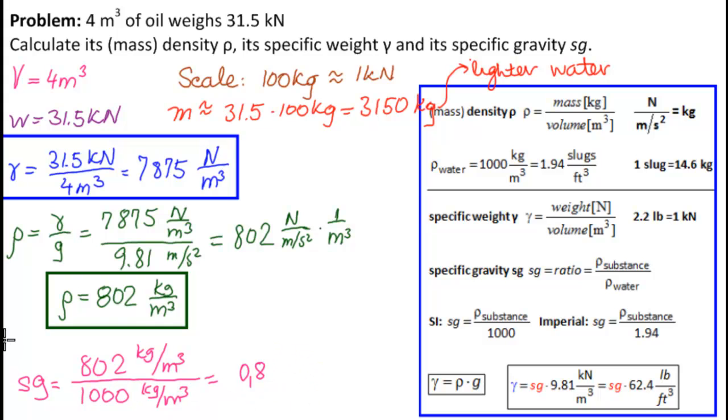So this is the answer to the third part of the problem. No units. 802 kilograms per meters cubed, that's good for density. Newtons per meters cubed, that's good for specific weight. Everything is in good shape.